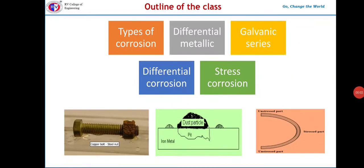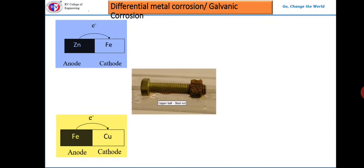Welcome back to Zinc chemistry class. Today we will discuss different types of corrosion like differential metallic, differential aeration, and stress corrosion. Let us start with the first one: differential metallic corrosion, or galvanic corrosion.